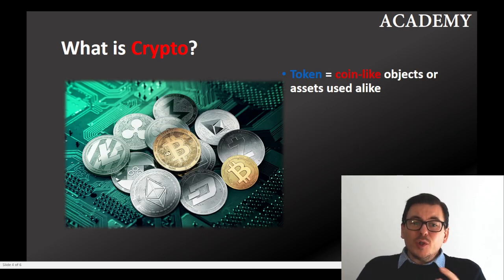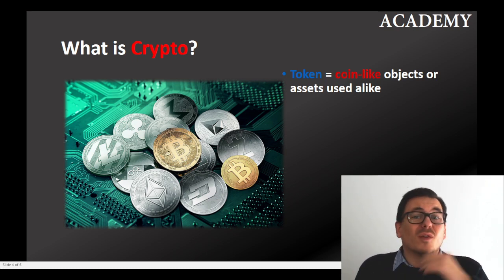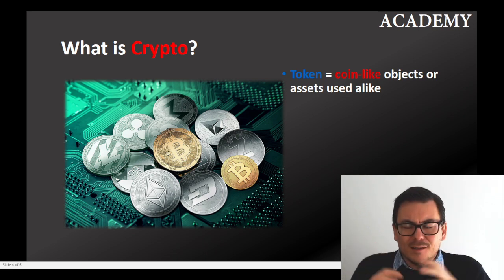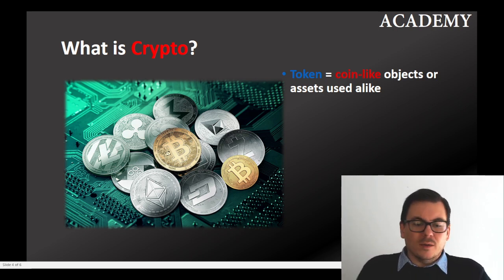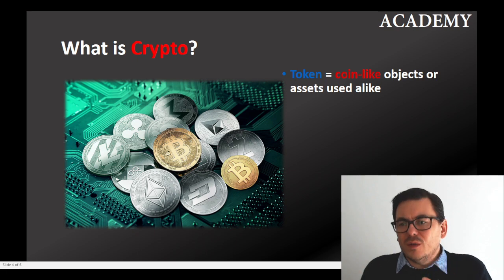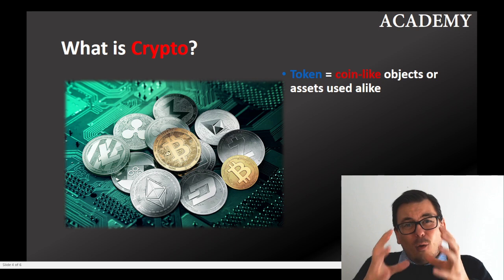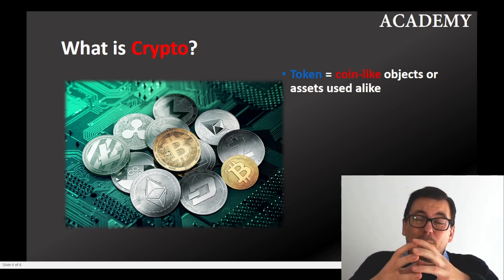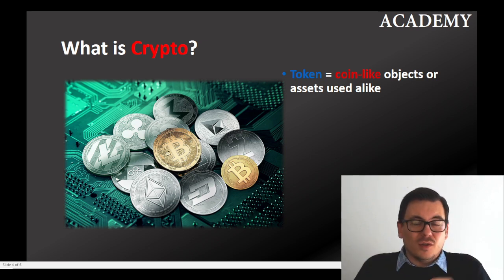Most of you know Bitcoin, and there are different tokens. 'Tokens' means coin-like objects or assets, because these coins are just a representation of an actual code. So when we talk about coins or currency, we're talking about an accumulated volume of encrypted sequences of numbers that represent a closed area, because you cannot have unlimited